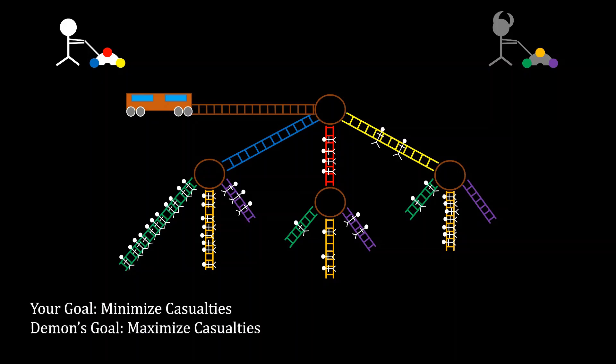You have benevolent preferences where you want to minimize casualties. On the other hand, the demon, being a demon, wants to maximize casualties. The puzzle is simple. Which path should you choose? Blue, red, or yellow?